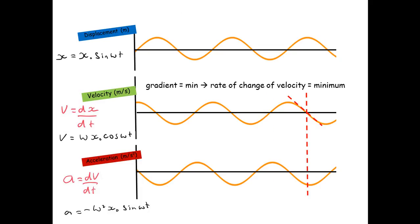And then finally here the gradient is a minimum. So therefore the rate of change of velocity is a minimum. And therefore we've got the acceleration down at the very bottom with its lowest possible value.